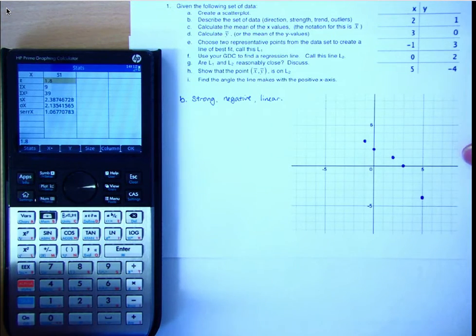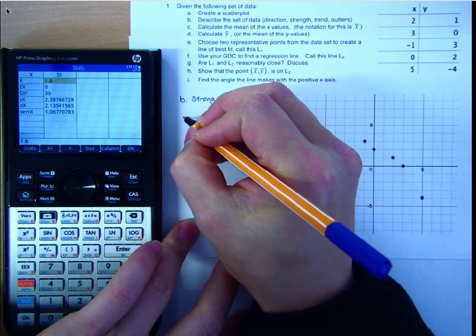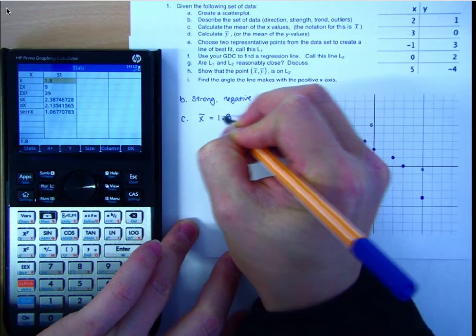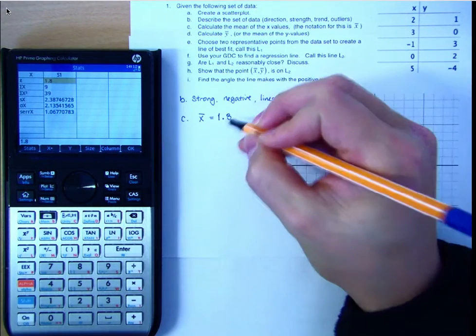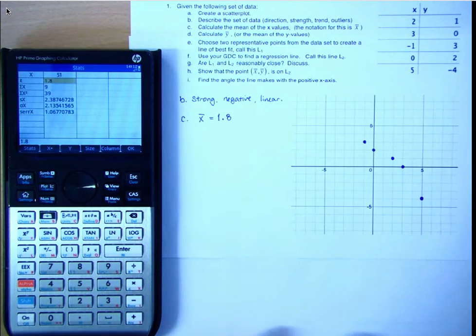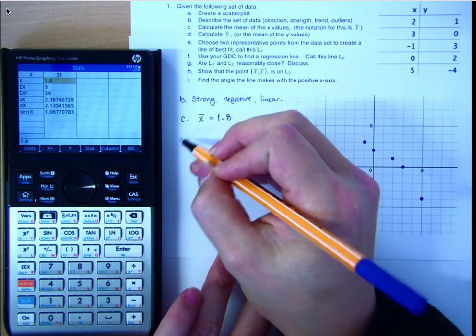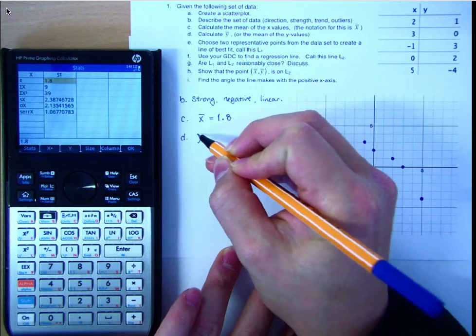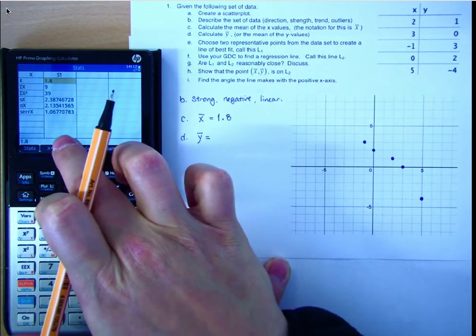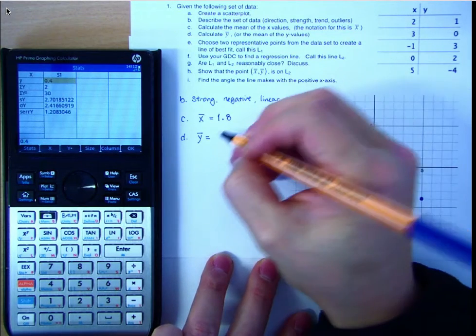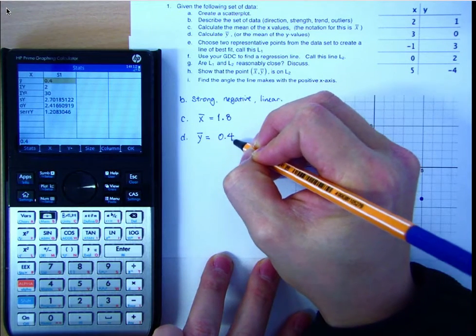So the mean of the x values is 1.8. In number, then on the touch screen in the bottom right corner is stats, and then you select x, and you can see that the mean of the x values at the top is 1.8. And very easily, if you press the y at the bottom, then you can get the y bar, the mean of the y values, 0.4. That's a nice feature.